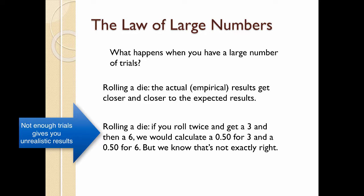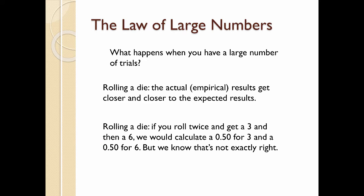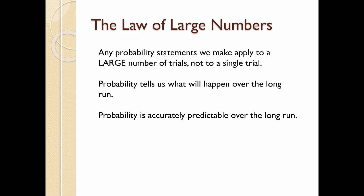So if you were to roll the die 60 times, or 100 times, or 500 times, or a million times, the more times you roll it, the closer you will get to the expected results. Any probability statements that we make really we assume apply to a large number of trials, not just to one single trial. Probability really tells us what will happen over the long run. And it's really only accurately predictable over the long run.